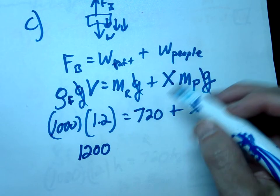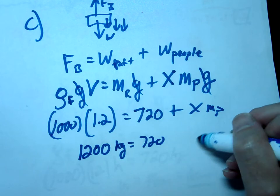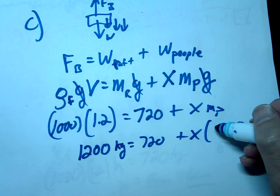But this is going to be 1200 here. In fact the units if you notice would be kilograms, that should equal 720 plus x and each person was 50 kilograms.